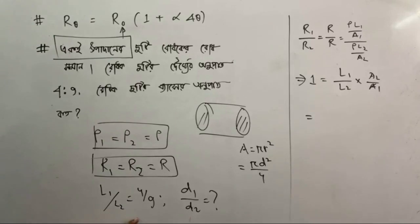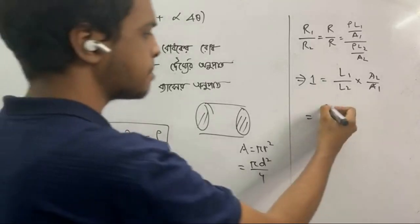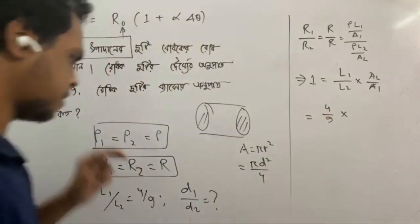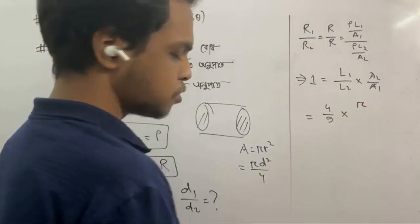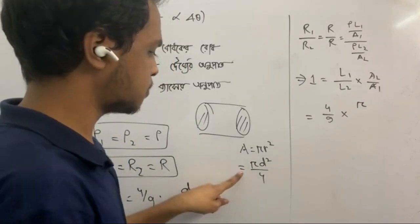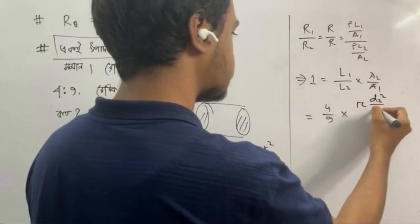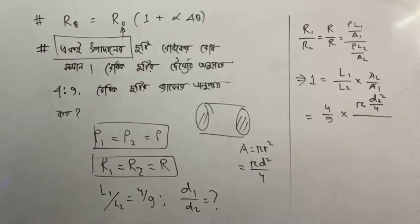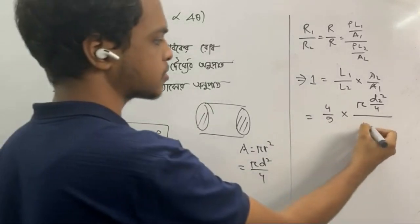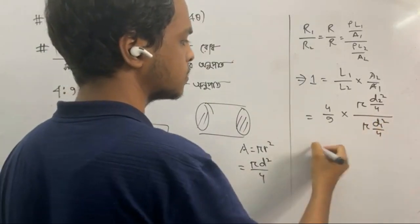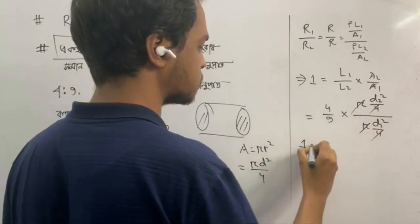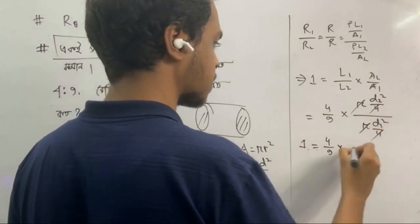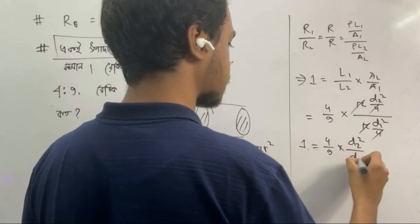So L1 by L2 is given as 4 by 9. Now A2 by A1 — A2 equals π d2² by 4, and A1 equals π d1² by 4. So π by 4 cancels out, giving A2/A1 equals d2²/d1². Therefore: 1 equals (4/9) into (d2² by d1²).